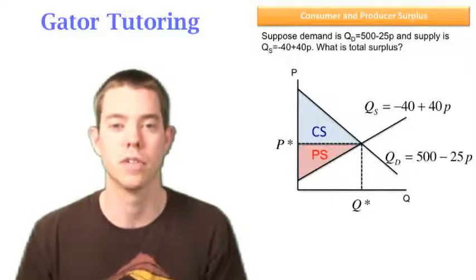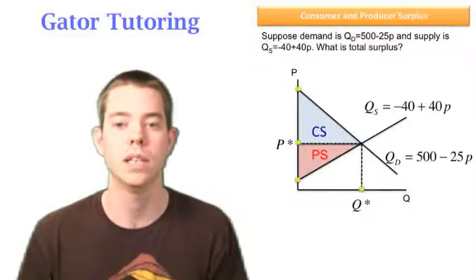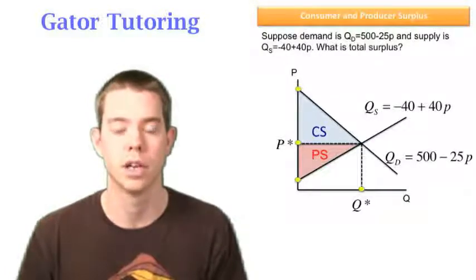We need to solve for the area of these two triangles. We need these four yellow points in order to do that.